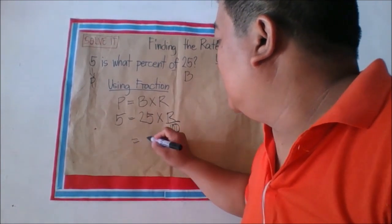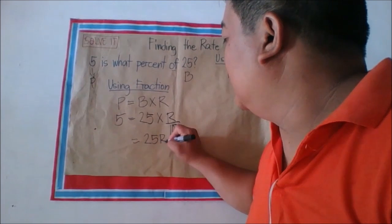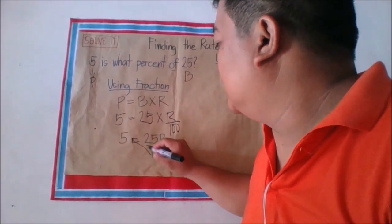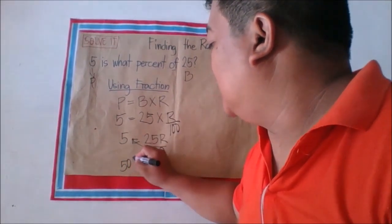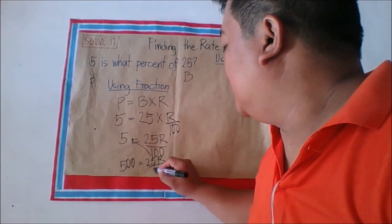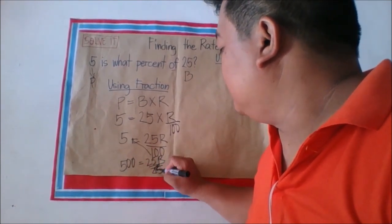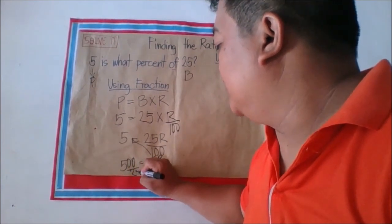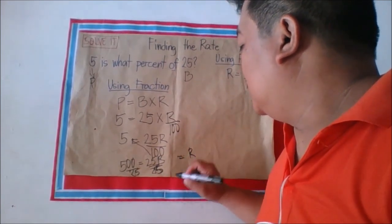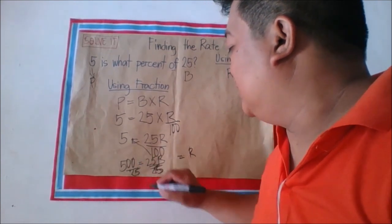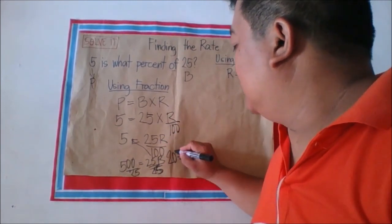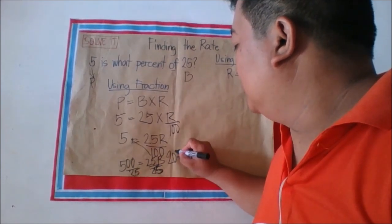25 times R equals 25R, and 100 times 5 equals 500. Using cross products: 100 times 5 is 500 equals 25R. To get the value of R, divide both sides by 25. So 25R divided by 25 equals R, and 500 divided by 25 equals 20. The rate is equal to 20, or 20%.